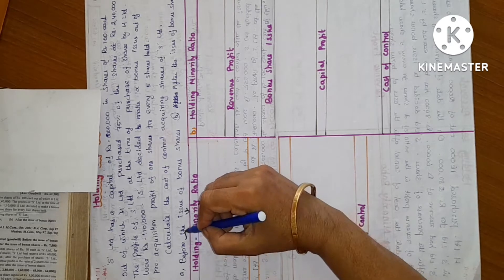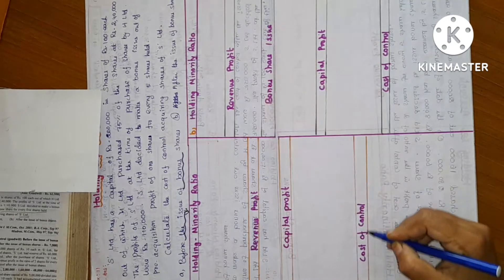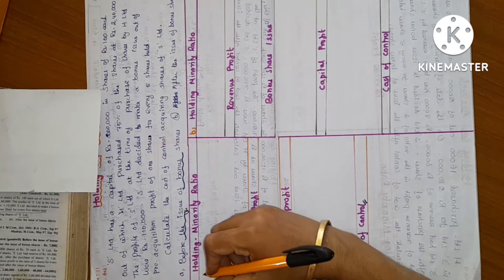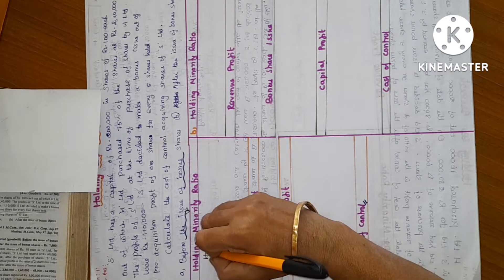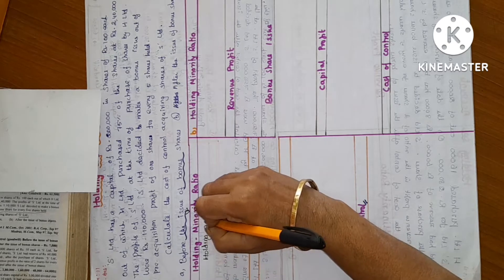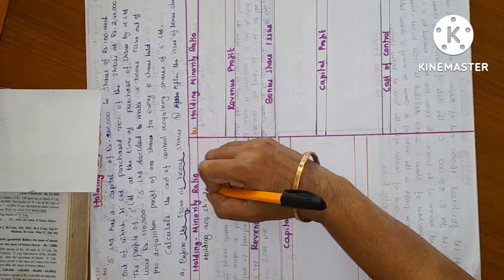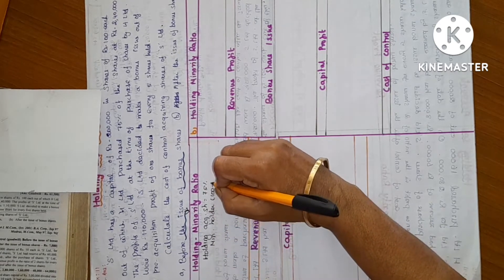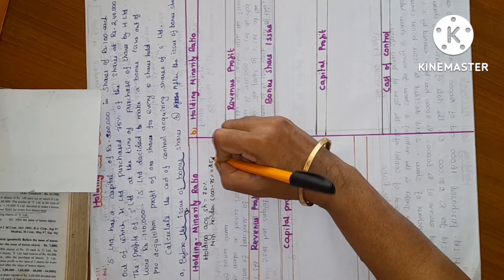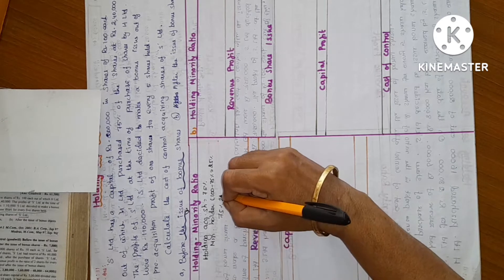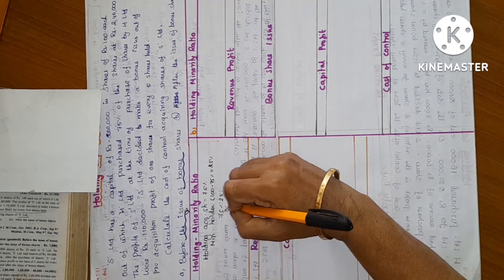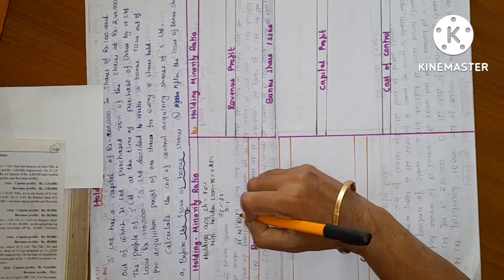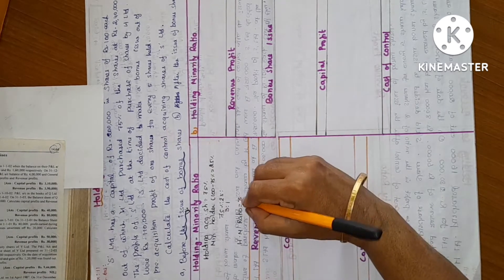Before sharing bonus shares, cost of capital. First step: minority holding ratio. Holding company acquiring 75% of shares. Minority holders: remaining 100 minus 75 = 25%. So holding to minority ratio is 75% to 25%, which is 3 is to 1.